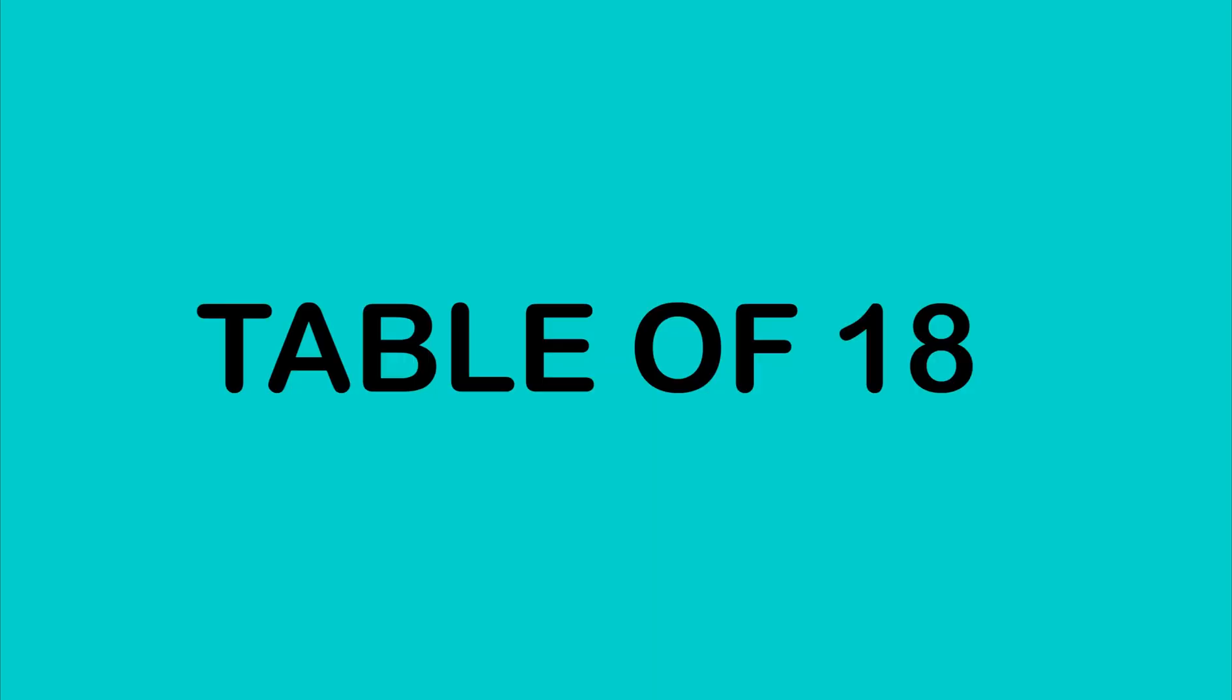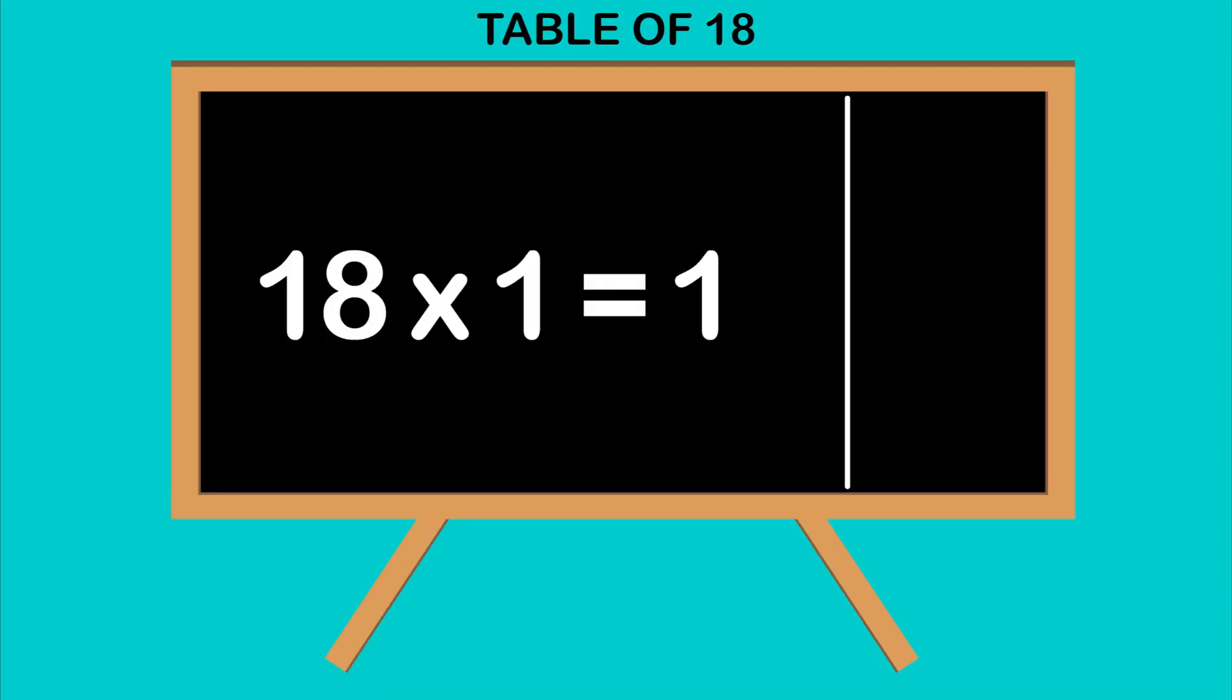Table of 18: 18 ones are 18, 18 twos are 36, 18 threes are 54, 18 fours are 72.